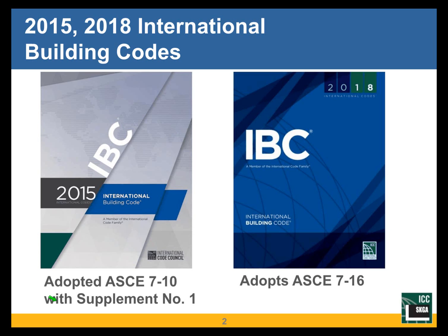The materials chapters 19, 20, 21, 22, and 23 are by reference to material standards. Chapter 19 on concrete adopts ACI 318 and makes a very small number of modifications. Only chapter 17 — inspections and tests — and chapter 18 — foundations and soils — are not by reference to other standards. They are chapters that are complete unto themselves. All the other structural chapters are by reference to standards.